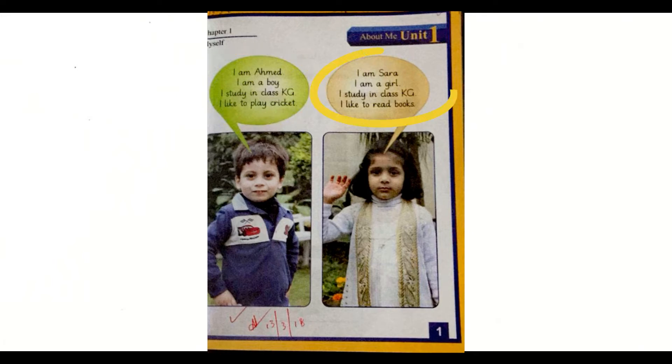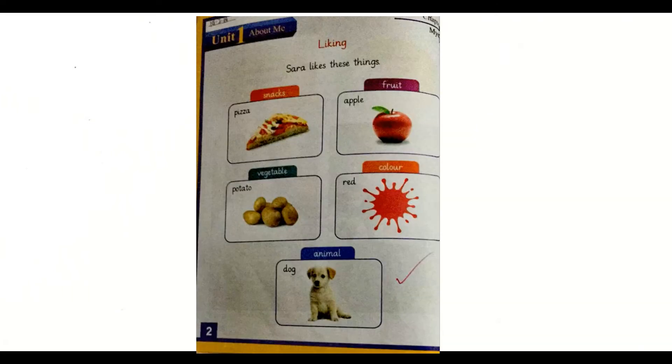And the girl is saying that 'I am Sara. I am a girl. I study in class KG. I like to read books.' Now come to page number two. Liking - Sara likes these things.